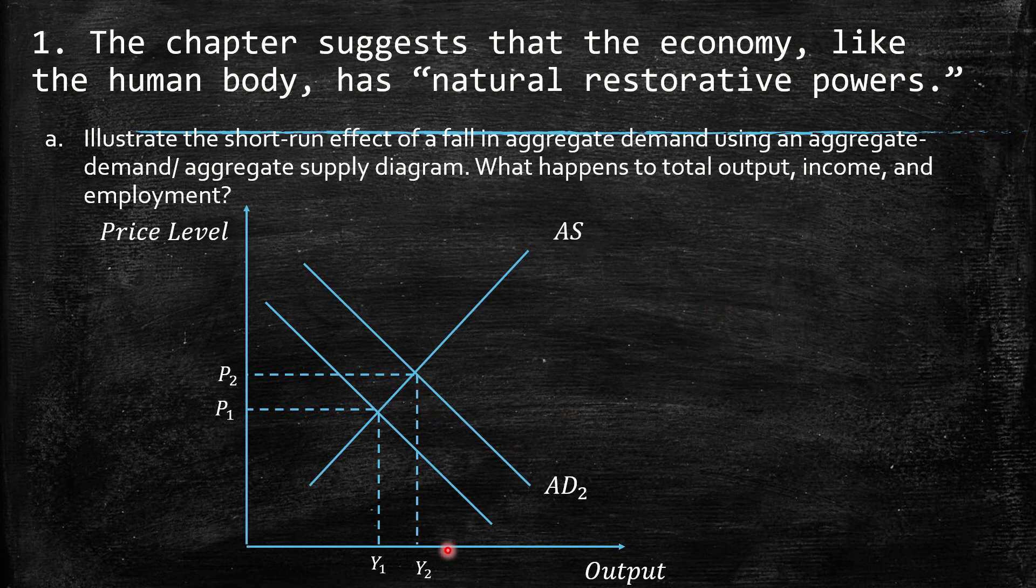So then here is the situation where we have a fall in the aggregate demand. We started from P2 and Y2, this is the initial point, and then we're going to have a decrease, so it's a shift to the left for the aggregate demand. Then the level of output naturally will be lower. And remember, when we talk about output, we are talking at the same time about the level of income, because GDP is the level of income as well. Then we have this decrease, and unemployment naturally will be higher due to the lower level of aggregate supply. So, then firms will hire less people.